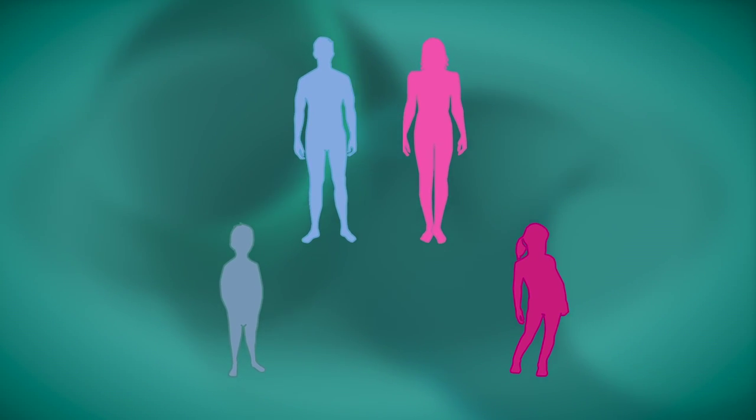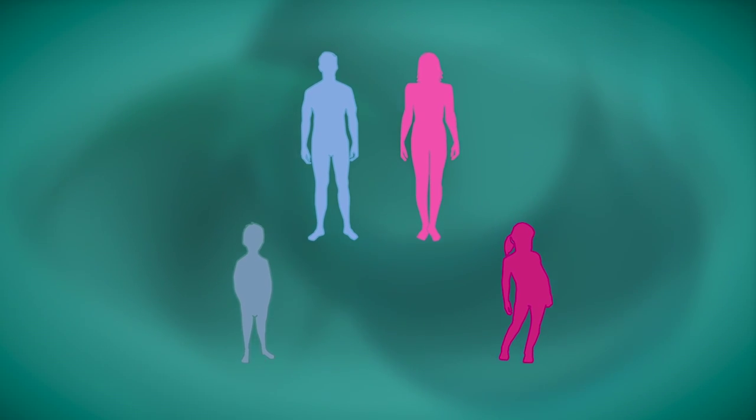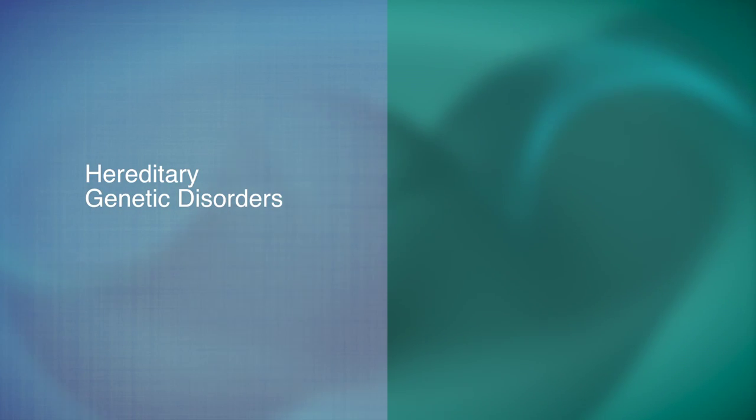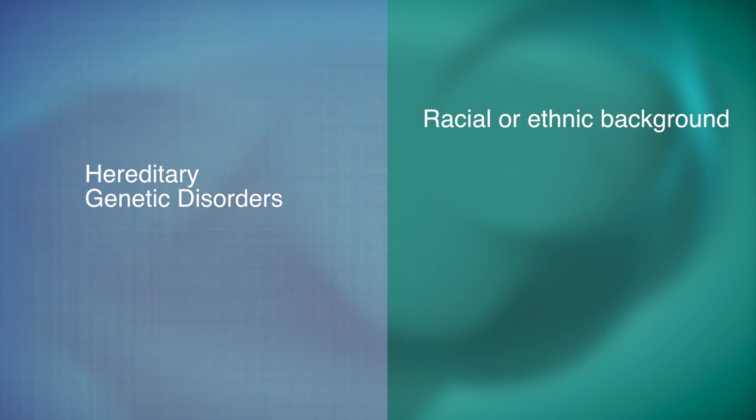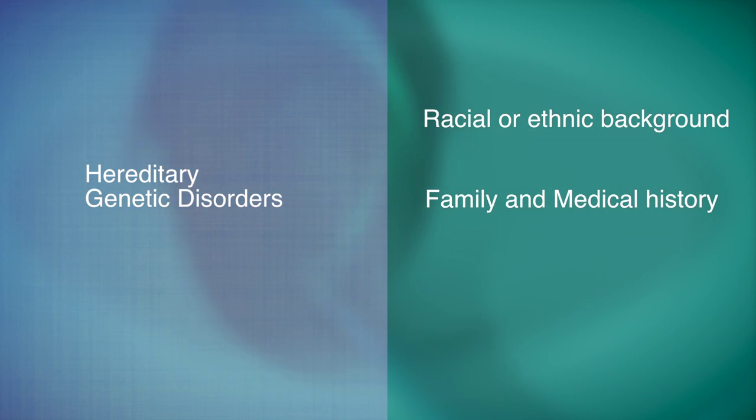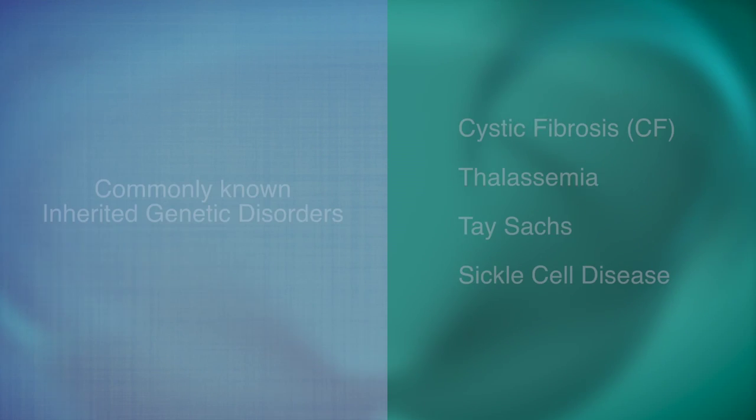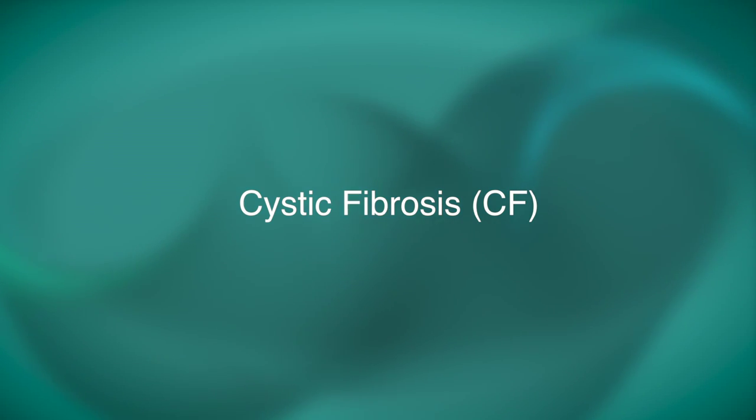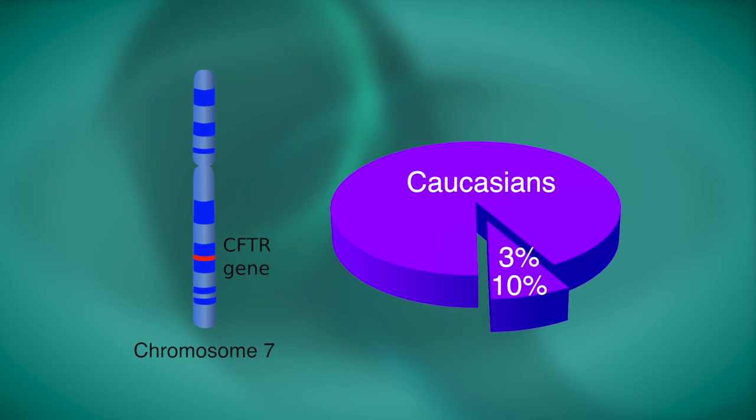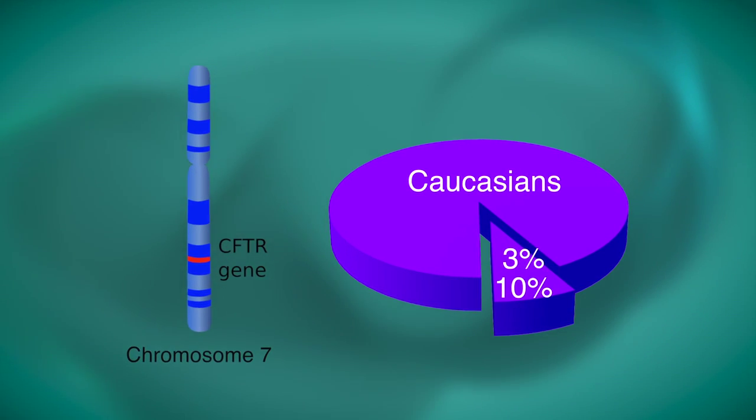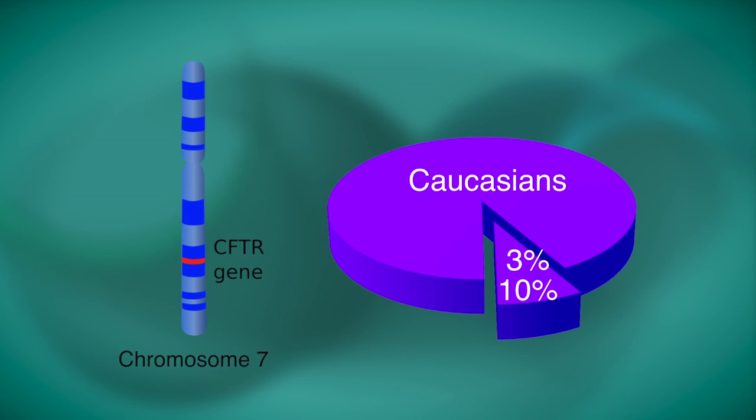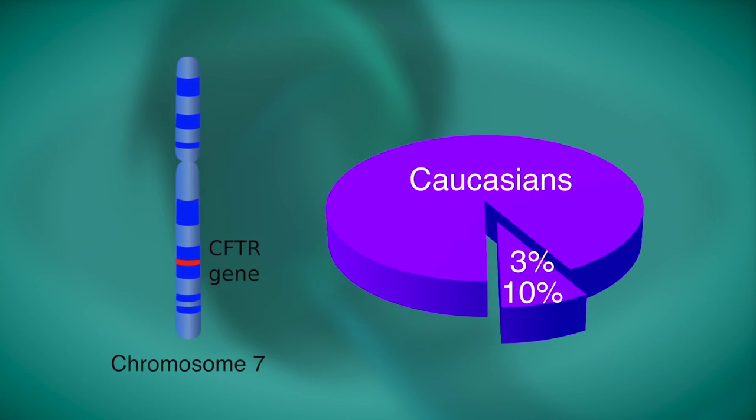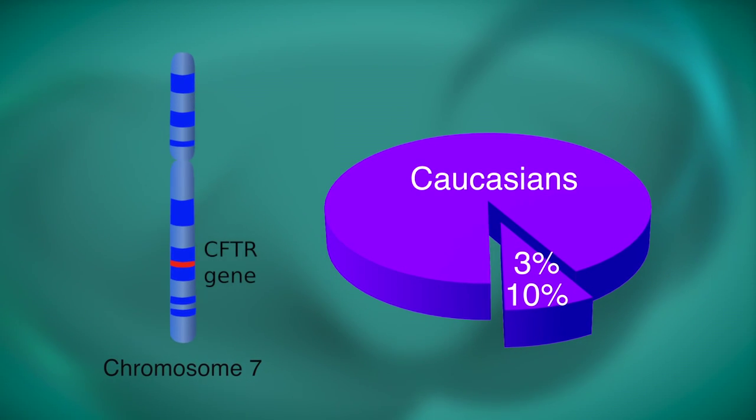Genetic screening by a blood test or cheek swab may help identify couples with hereditary genetic disorders that may affect offspring depending upon the racial or ethnic background of the couple, their family and medical history, and associated conditions. Some examples of the more commonly known inherited genetic disorders includes cystic fibrosis. It is estimated that three percent to ten percent of Caucasians carry a defective CF gene, but do not have symptoms because a person must inherit two defective CF genes, one from each parent, to develop the disease.